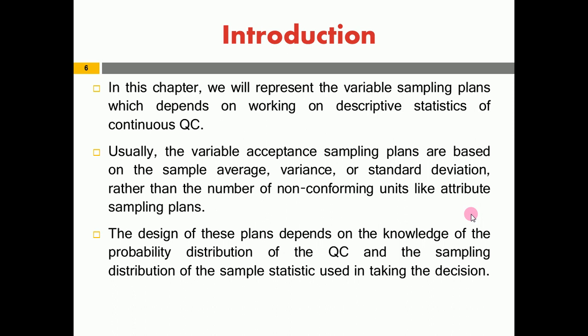To calculate the probability of acceptance, you need the probability that x-bar falls in a certain interval. To compute this probability, you need the probability distribution of the sample statistic. If you don't know the distribution, you will not be able to work with the variable sampling plan. You must know the distribution of X and the distribution of x-bar — without that, you cannot calculate any performance measure. In this chapter, we restrict our study to assuming the quality characteristic of interest follows a normal distribution, though the same work can be extended to other distributions.